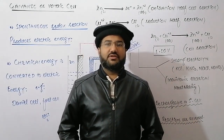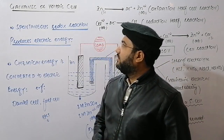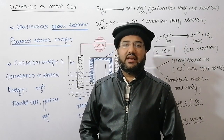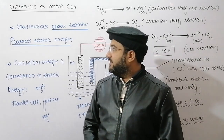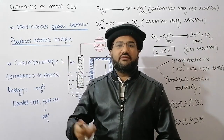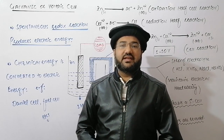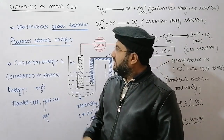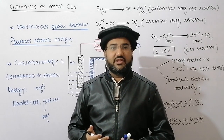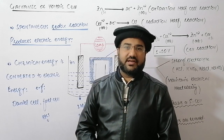Today we are going to start a very important topic, which is the galvanic or voltaic cell. The galvanic or voltaic cell is an example of the electrochemical cell in which a spontaneous redox reaction takes place, and as a result of that spontaneous redox reaction, electric energy or electricity is produced. This is a spontaneous reaction that takes place on its own without any external aid — no energy is required to start this redox reaction.